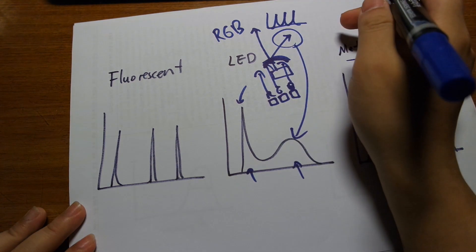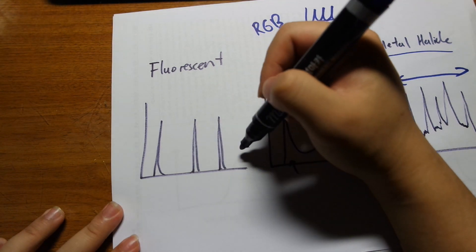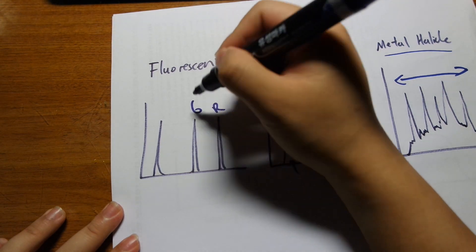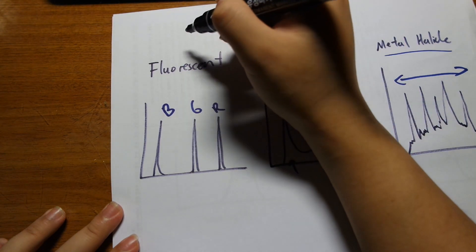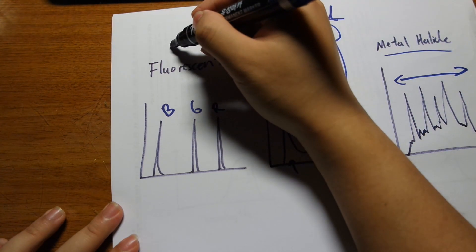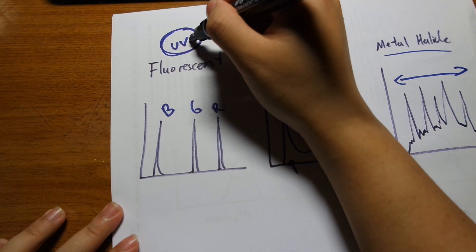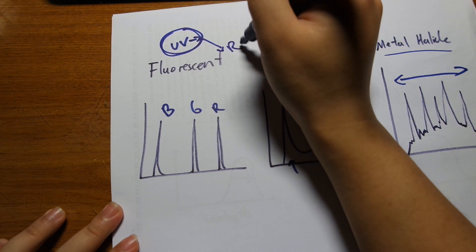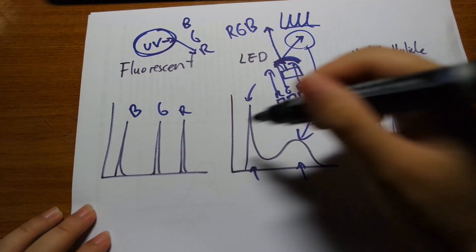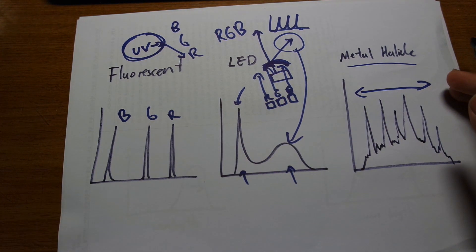The fluorescent light bulb will usually have three spikes of light: a red spike, a green spike, and a blue spike. That is because fluorescent lights, similar to a conventional white LED, are actually producing UV, and the coating on the light bulb turns this UV into either red, green, or blue. So they will have these three spikes. The shape of the spectrum looks different depending on the type of light bulb.